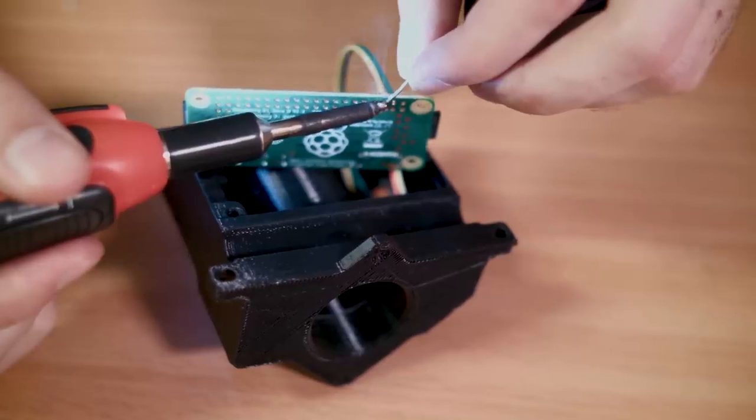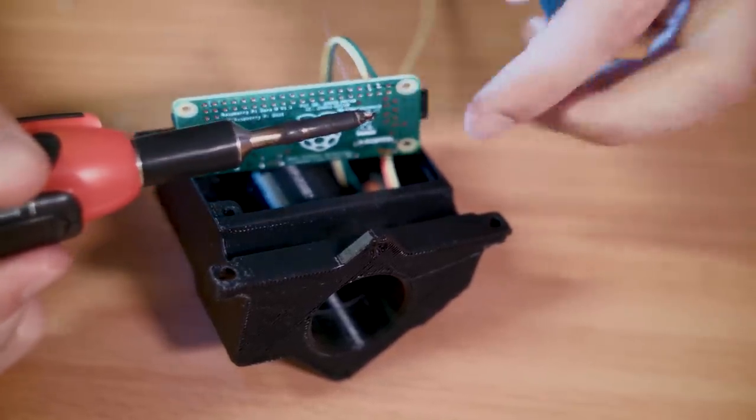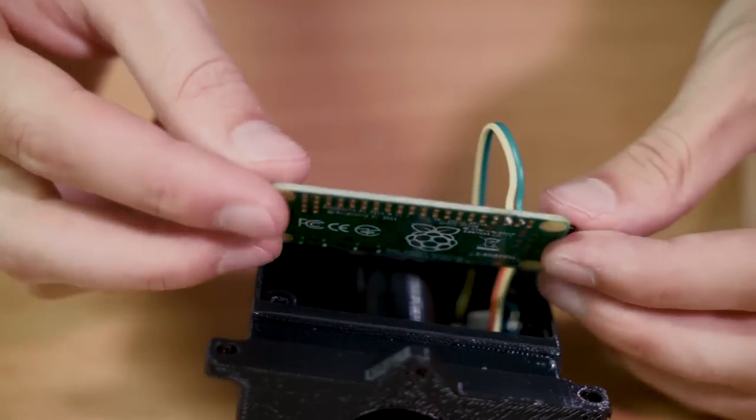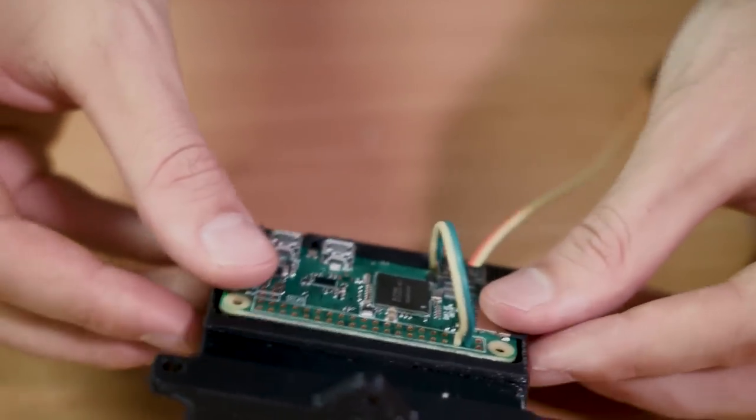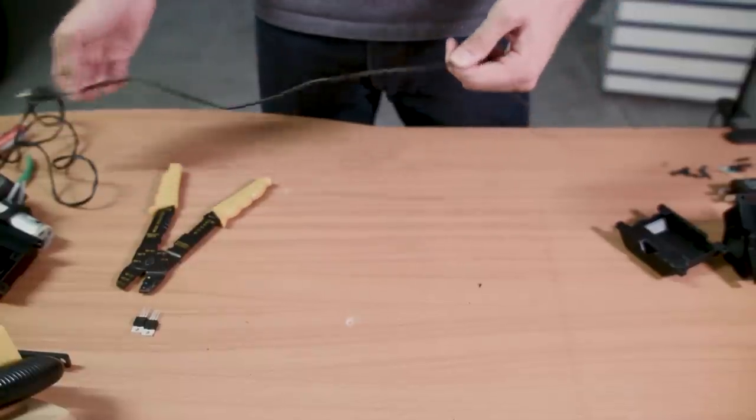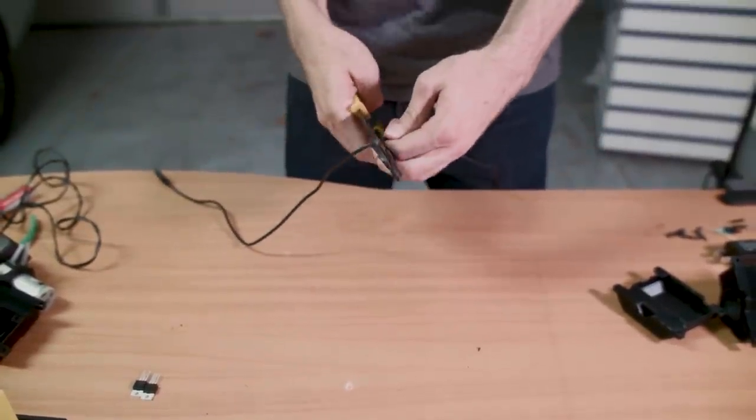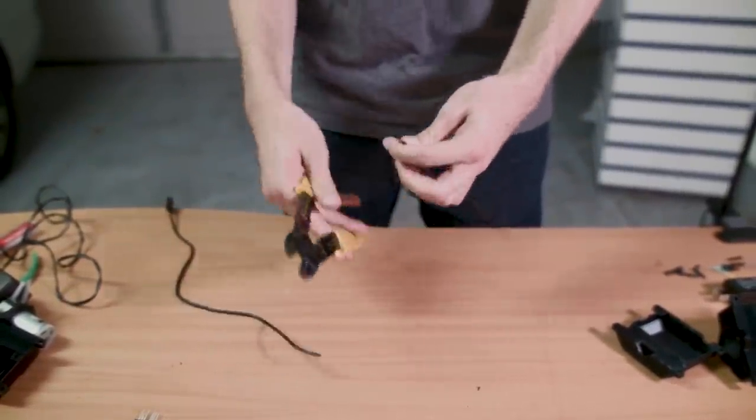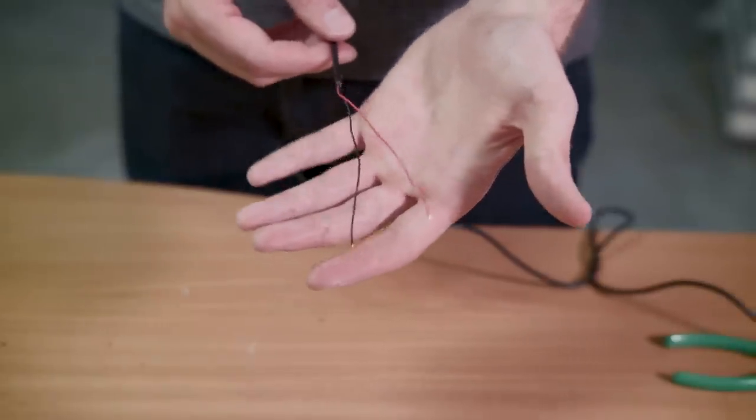We then connected the input to 5 volt and ground on the Raspberry Pi. We snipped the connector off the USB cord for the 5 volt grow light so that we could expose the wires and connect them to our Pi.